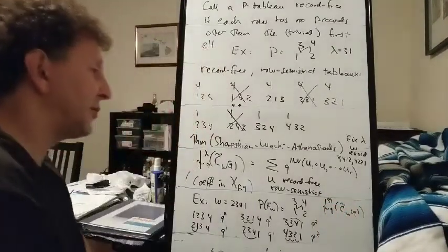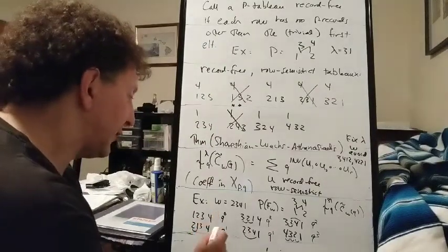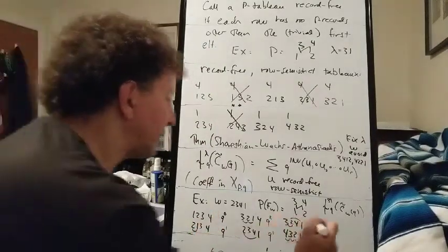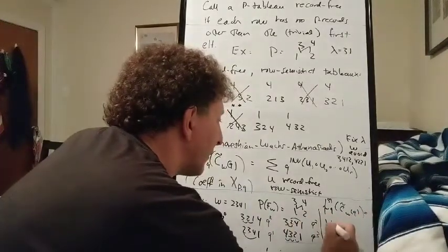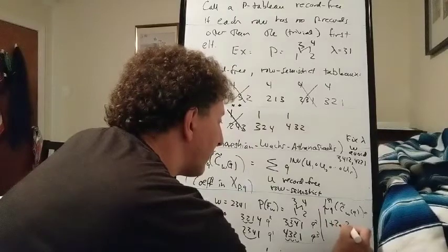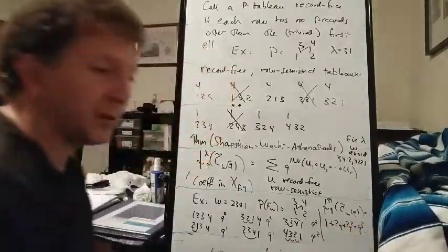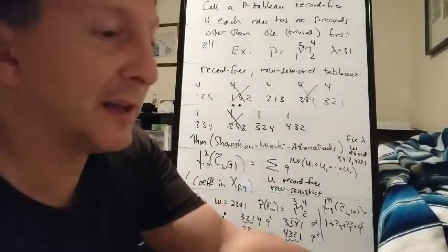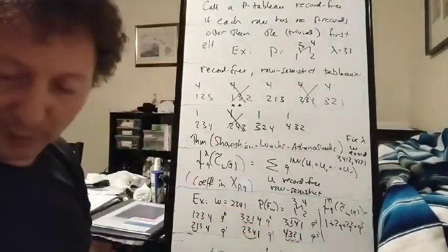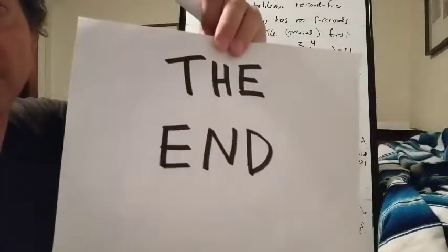So applying the power sum trace to this Cauchy down-listing basis element, we get 1 plus 2Q plus 2Q squared plus Q cubed. Which is good because that matches what we got last time when we used different tableau.